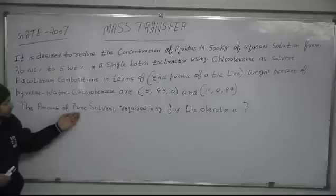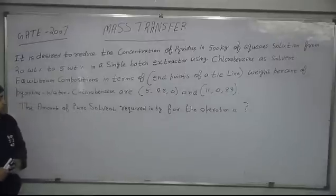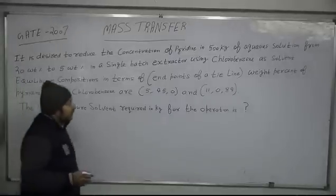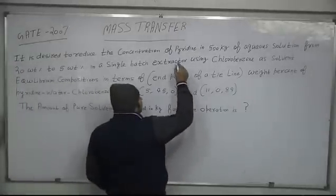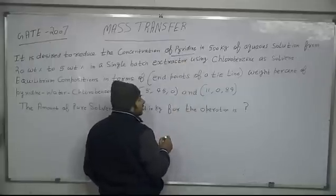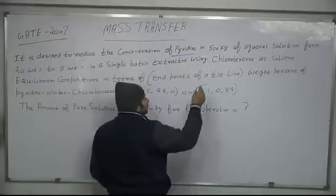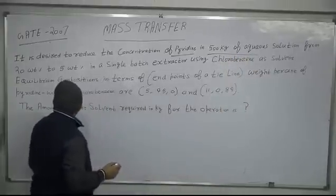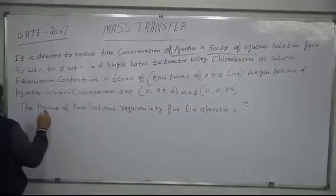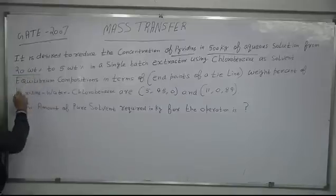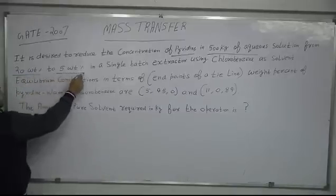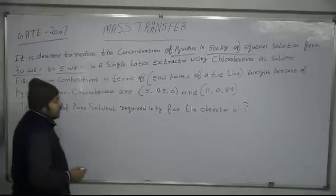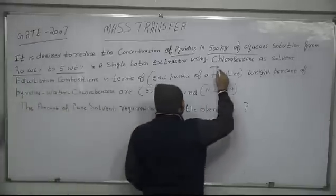So our goal is to find the amount of pure solvent required. We mark some important noticeable points. The first important point is the solute — the solute is pyridine — and the total flow rate of the solution is 500 kg. Our initial concentration is 20 weight percent and the goal is 5 weight percent. We want to achieve this using chlorobenzene.